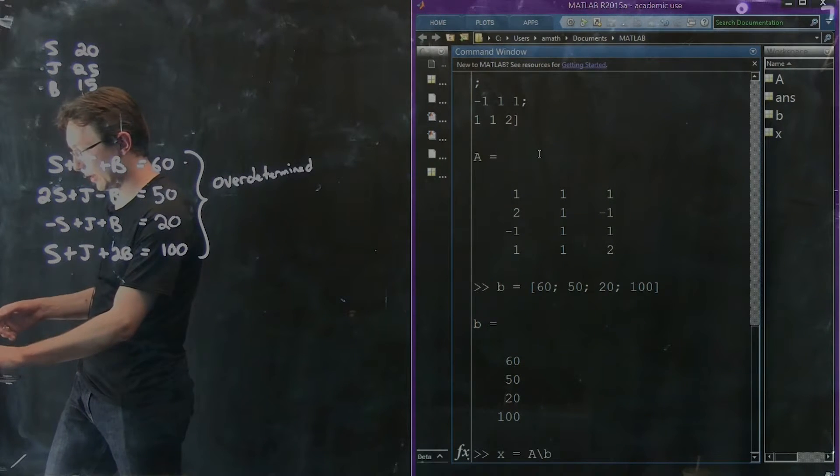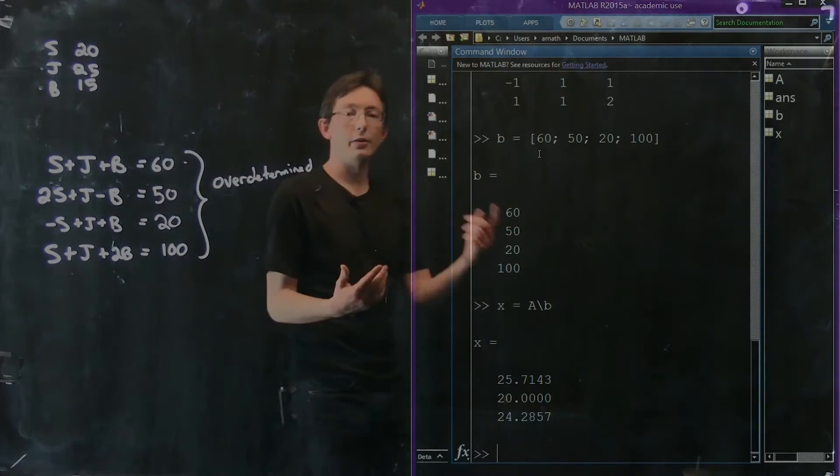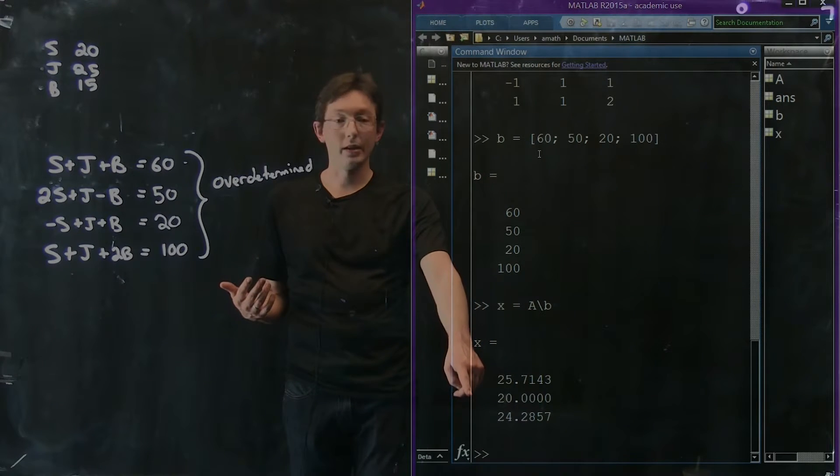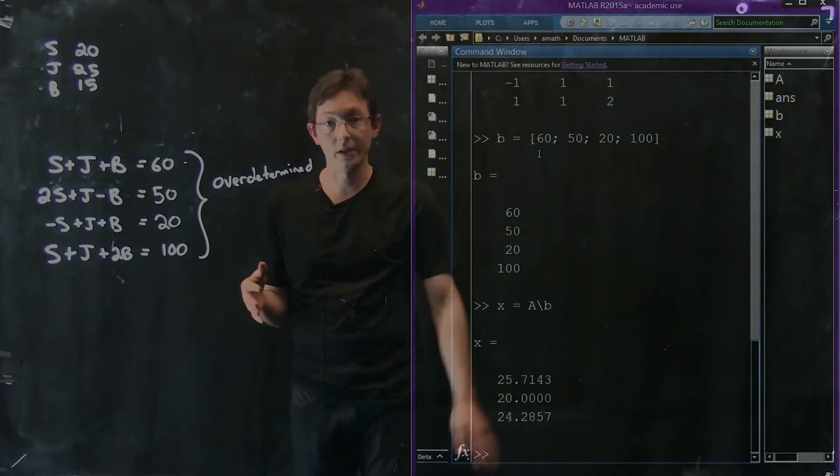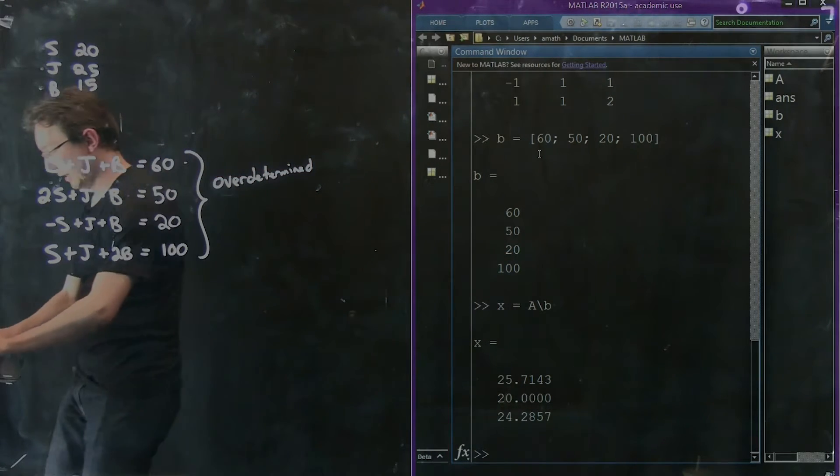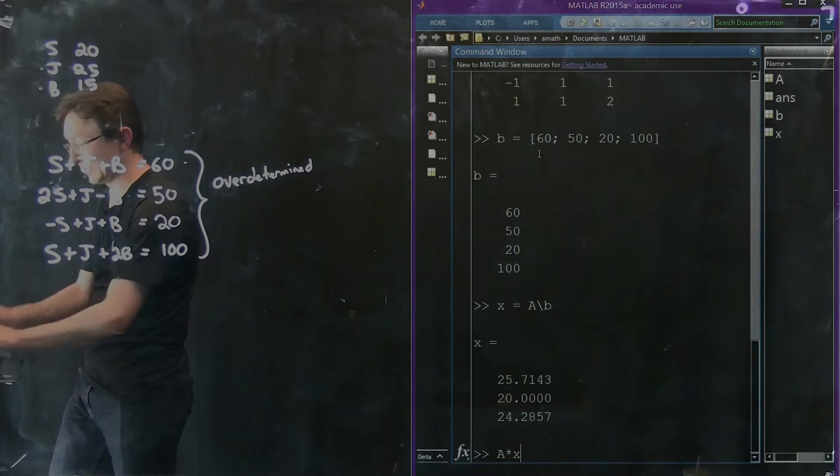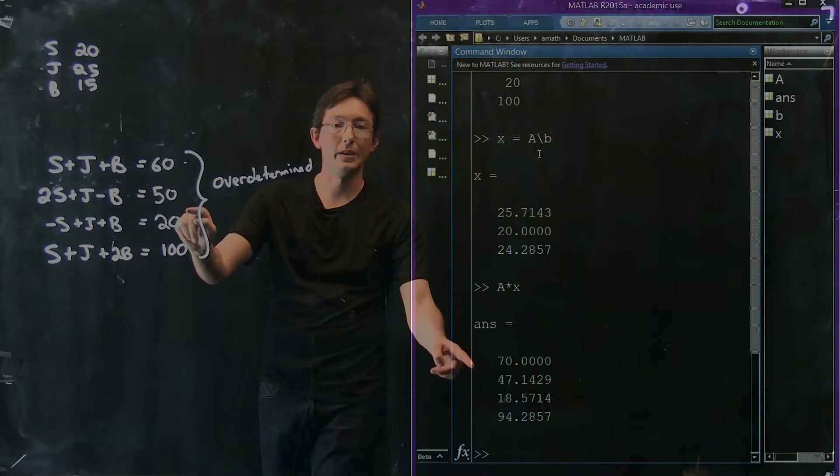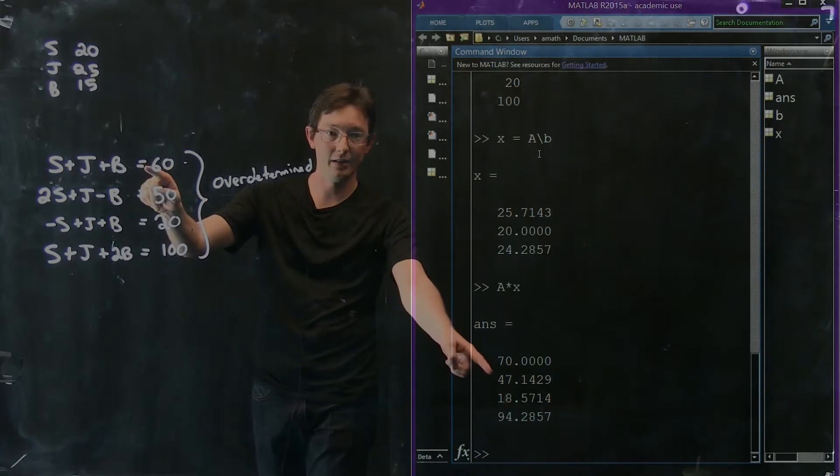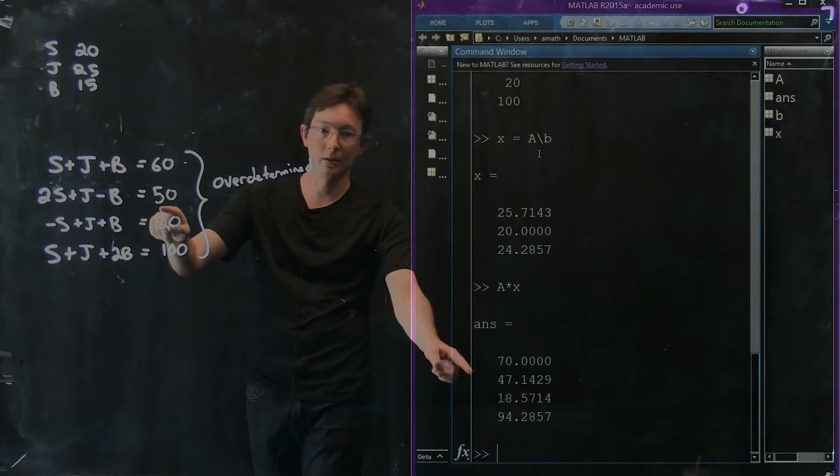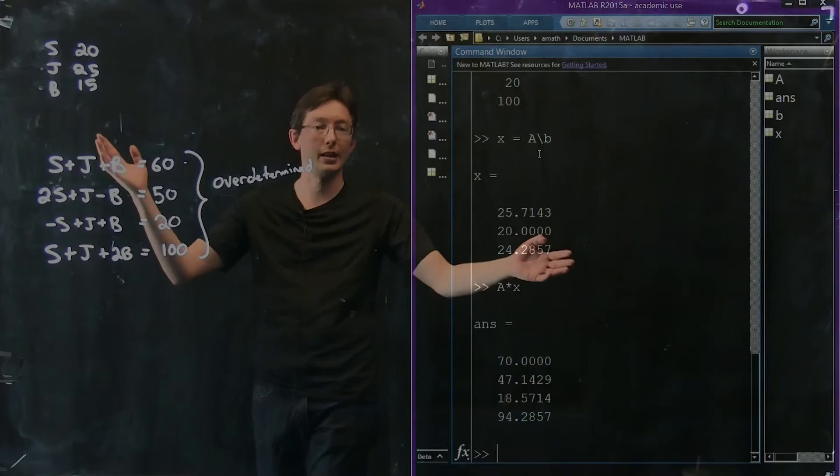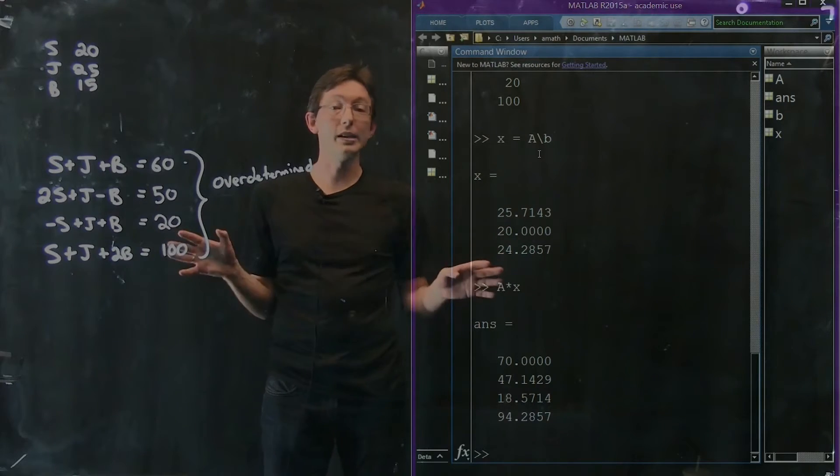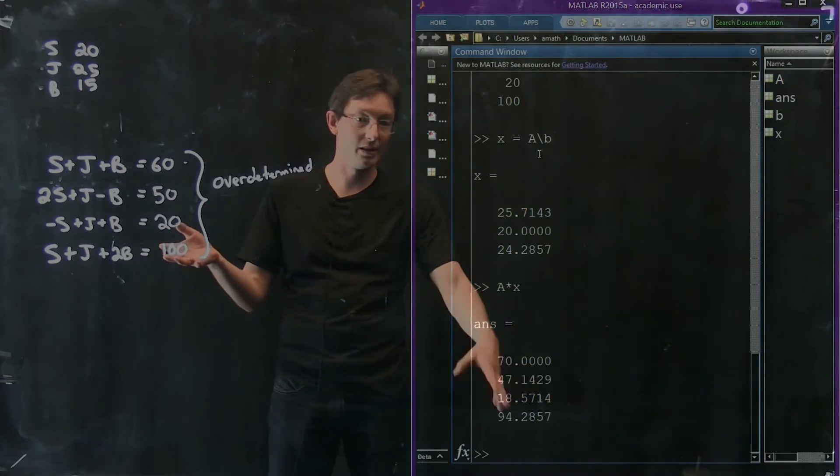So X equals A backslash B. Let's try that first. So backslash thinks that the best thing is for Sally to be 25.7, John to be 20, and Bob to be 24.3 years old. But if I plug this in, if I say, well, what is A times X, it only gets close to B. It's not actually that perfect. It's off by 10 in the first equation, 3 in the second equation, 1.5 in the third equation, and it's off by about 6 in the last equation. So it's close. These are close to the right, these come close to solving this, but there is no unique solution of this system, and so MATLAB only gets close.